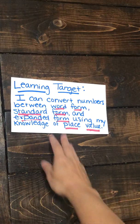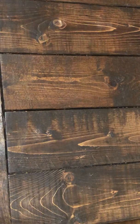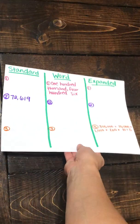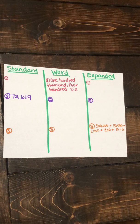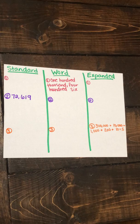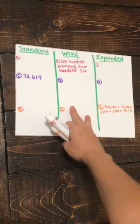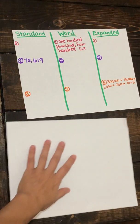I've created a chart for us and let's see if we can fill in the different forms of our numbers. Let's look at our first example. In our first example we are given word form and we need to find standard form and expanded form. I'm going to draw my place value organizer to help me switch from word form to standard form.